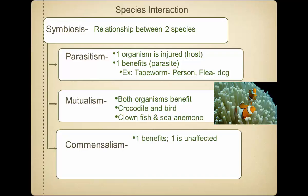The next and last type of relationship is called commensalism. In this one, one organism benefits and the other is not really affected either way — it doesn't help it, but it doesn't hurt it either. For example, barnacles are crustaceans that attach to piers and docks, and sometimes to whales. They get a ride and filter food out of the water, but they don't harm the whale in any way.